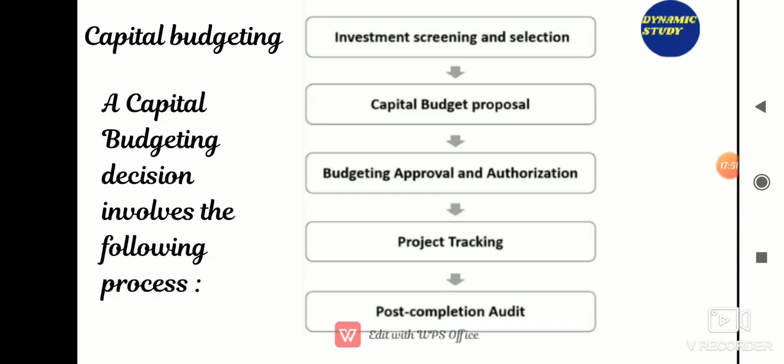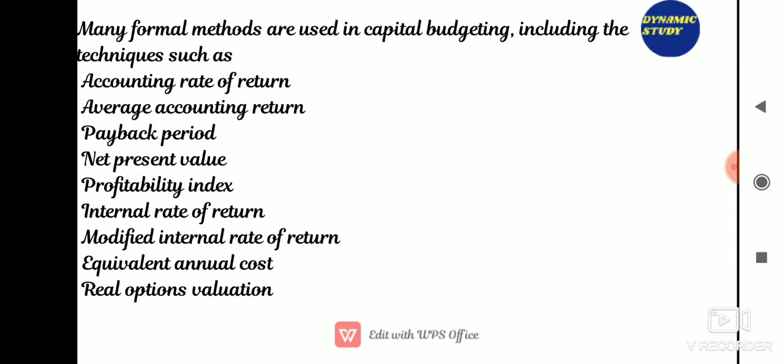Capital budgeting is the planning process used to determine whether an organization's long-term investments — such as new machinery, replacement of machinery, new plants, new products, or research and development projects — are worth funding through the firm's capitalization structure. It is the process of allocating resources for capital or investment expenditure. One primary goal of capital budgeting is to increase the value of the firm to shareholders. Formal methods used in capital budgeting include: accounting rate of return, average accounting rate of return, payback period, net present value, profitability index, internal rate of return, modified internal rate of return, and equivalent annual cost or real option value.